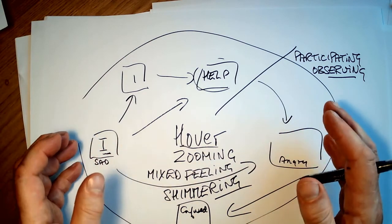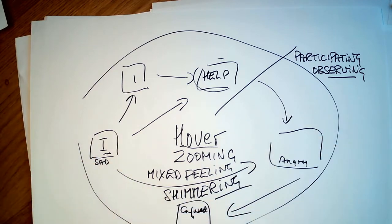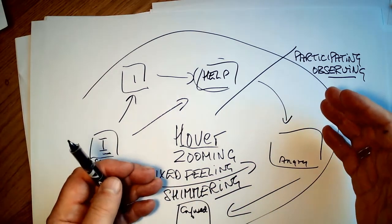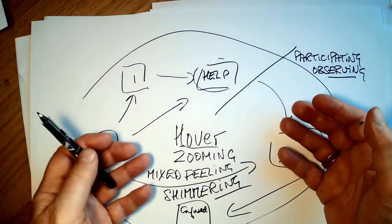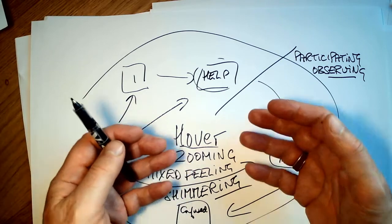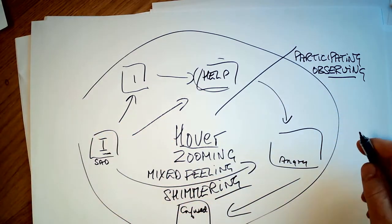Think about this process of hovering and shimmering as the process of mapping unfolds. It's not about getting a map done, it's about being in the disentangling, co-creating space of mapping.